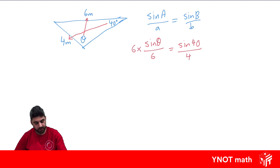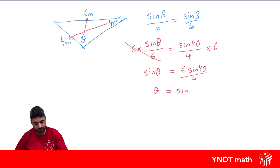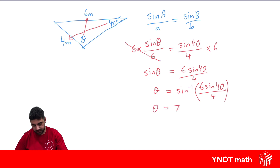Do a bit of algebra — multiply both sides by 6, the 6s cancel. So sine theta equals 6 sine 40 over 4. Then take the inverse sine of the right-hand side: inverse sine of (6 sine 40 over 4), which gives us 74.6 degrees to one decimal place.